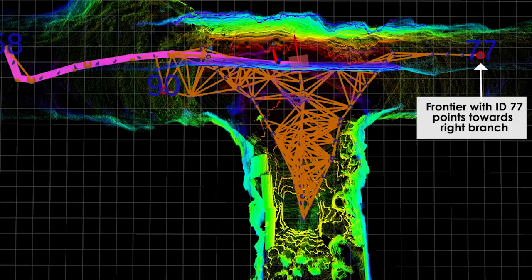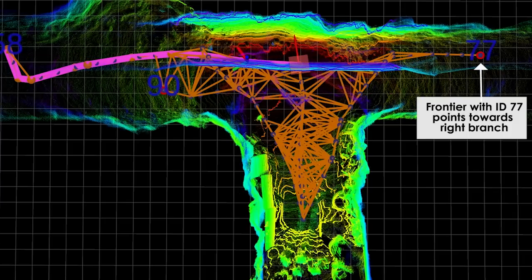During this experiment, the local planner first chose to explore the left branch based on its calculation of the volumetric gain.